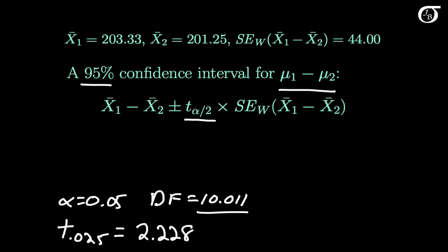And so now we can calculate our interval. The sample mean of group 1 is 203.33, subtracting off 201.25, the mean of group 2, and we add and subtract our t-value of 2.228 times the standard error of 44.00.